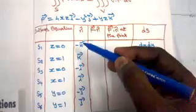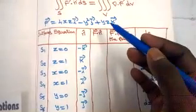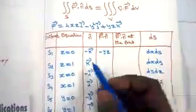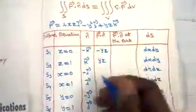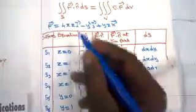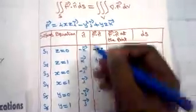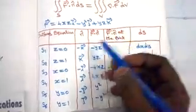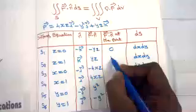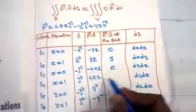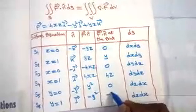Computing f·n for each surface: for S1 (n = −k), the k-component of F is yz, so f·n = −yz; at z = 0 this gives 0. For S2 (n = +k), f·n = yz; at z = 1 this gives y. For S3 (n = −i), f·n = −4xz; at x = 0 gives 0. For S4 (n = +i), f·n = 4xz; at x = 1 gives 4z. For S5 (n = −j), f·n = y²; at y = 0 gives 0. For S6 (n = +j), f·n = −y²; at y = 1 gives −1.